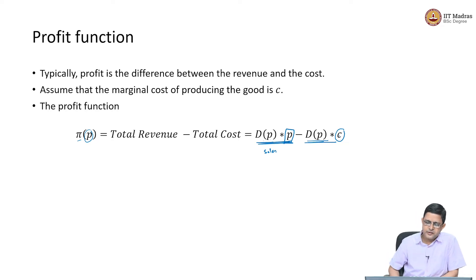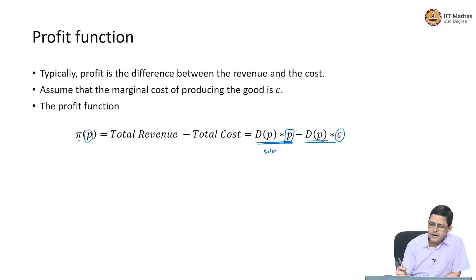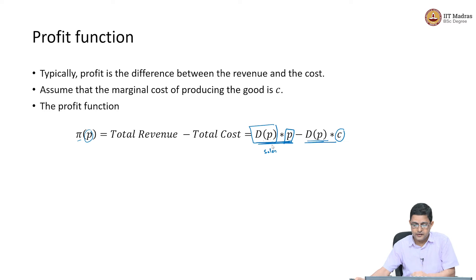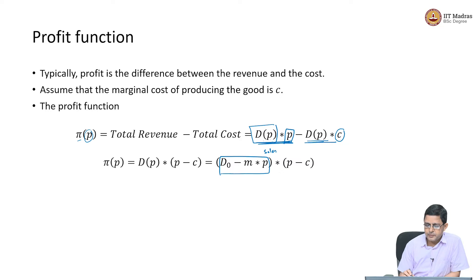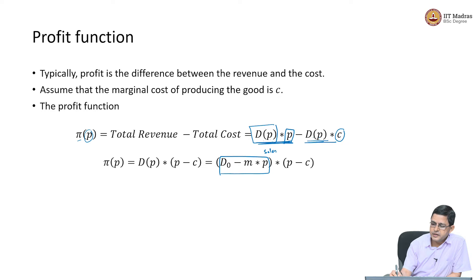What we are going to do is very similar to what we had done for revenue maximization. Demand is a function of price, and we will write that linear relationship. We will replace D(P) with the equation D₀ minus M times P. Separating out the common factor D(P), the profit function becomes (D₀ minus M times P) multiplied by (P minus C).